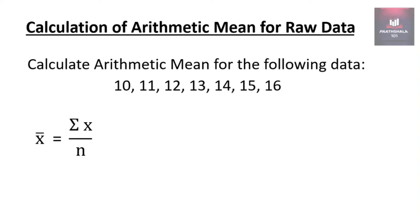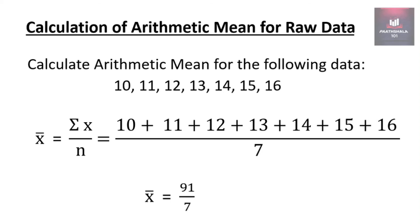Now x bar is summation x upon n which is total of all x. So we will add up 10 plus 11 plus 12 plus 13 plus 14 plus 15 plus 16. As there are 7 entries in it, we will divide by 7. The total comes to 91 which when divided by 7 gives 13. So the arithmetic mean is 13.